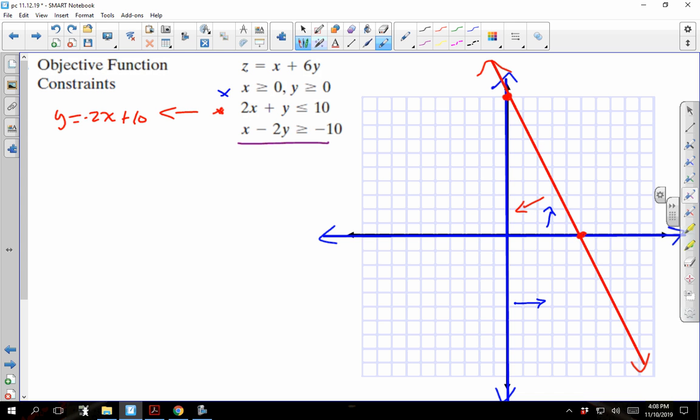We have one more equation to graph. I'm going to use the cover-up method. If x goes to 0, we divide both sides by negative 2. We get y is equal to 5. So I've got a point right there. If y goes to 0, we get x equals negative 10. And negative 10 is going to be all the way over here.